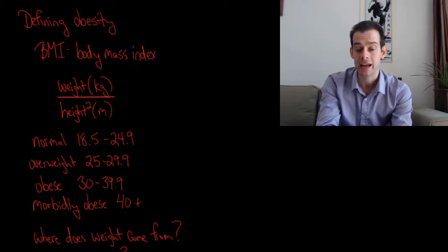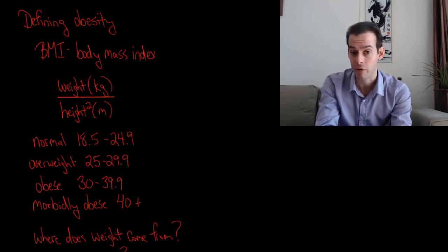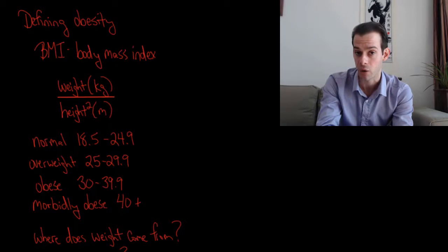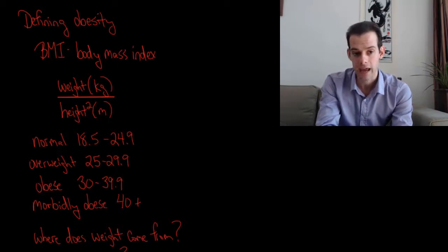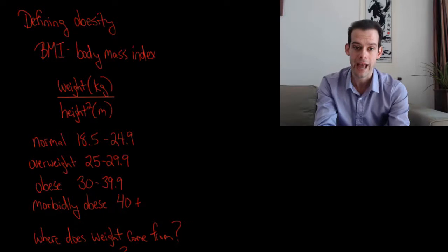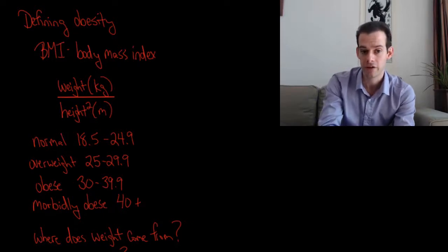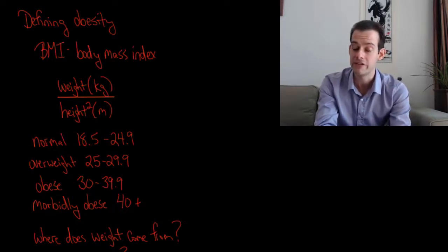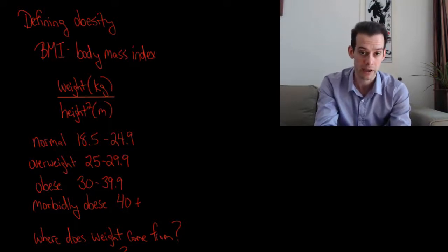A normal BMI is considered to be around 18.5 to about 24.9. It's possible to be underweight—I mentioned in the video on eating disorders, anorexia nervosa, that it's common to see BMI that's very low, as low as 15. But the normal range is 18.5 to 24.9. When you get above that to 25 up to about 29.9, that's considered overweight. Then we have the definition of obesity starting at BMI of 30 and above. If your BMI is 40 or higher, you're considered to be morbidly obese.